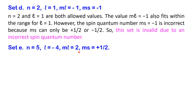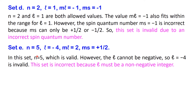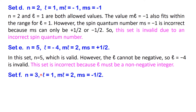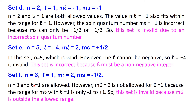For the next set: n=5 is valid, however the angular momentum quantum number l cannot be negative, so l=−4 is invalid. This set is incorrect because l must be a non-negative integer. For the final set: n=3 and l=1 are allowed, however ml=2 is not allowed for l=1 because the range for ml when l=1 is only negative one to positive one. So this set is invalid because ml is outside the allowed range.